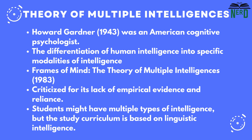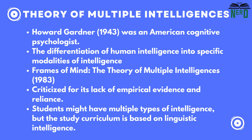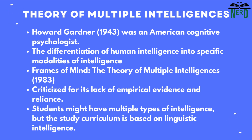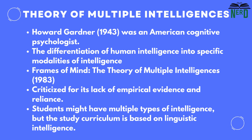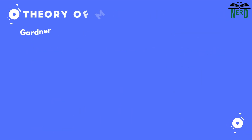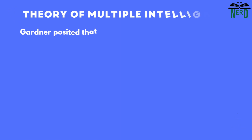Mainstream psychology has criticized the theory for its lack of empirical evidence and reliance on subjective assessment. Gardner argues that students might have multiple types of intelligence, but the study curriculum is based on linguistic intelligence. This theory suggests individuals can develop eight distinct spheres of intelligence.